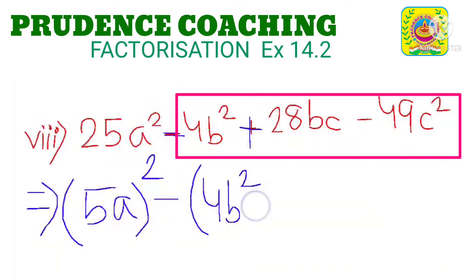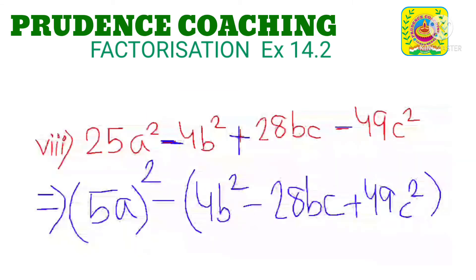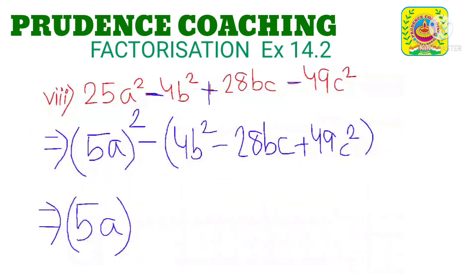Here we have taken minus common, so this will be minus 28bc. And this one we have taken minus common, and this is also minus, so the sign will change — it will become plus. So here 49c square remains as it is.